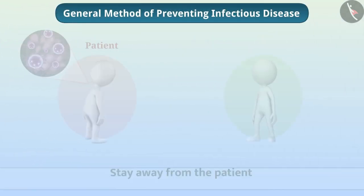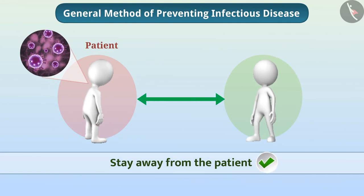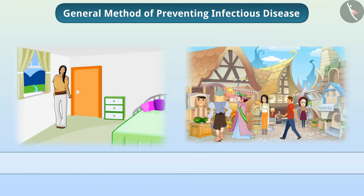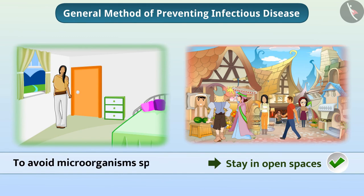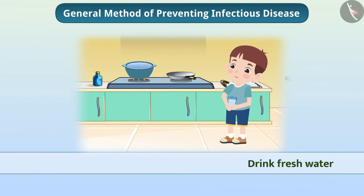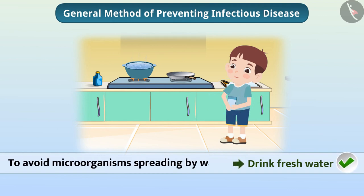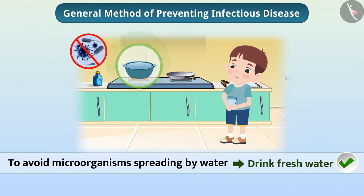The common method of preventing infection is to stay away from the patient. For example, one should stay in open spaces and away from crowded places to avoid microorganisms spread by air. Fresh water should be drunk to avoid microorganisms spreading by water, and measures are taken to kill the microorganisms present in the water.